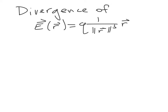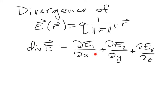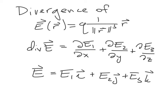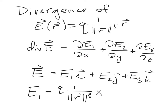We'll start by finding the divergence of this vector field. This is the partial of E1 with respect to x, plus the partial of E2 with respect to y, plus the partial of E3 with respect to z, where the vector field is written as E1 for the i component, E2 for the j component, and E3 for the k component. For the vector field above, there's a 1 over magnitude of R cubed times Q that's part of every component. The E1 component is Q over magnitude of R cubed times x; E2 is similar with y instead of x, and E3 with z instead of x.